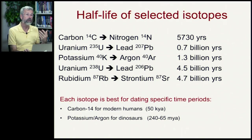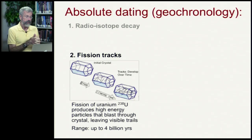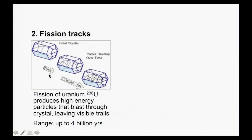A more recent technique in geochronology that's just become available in the last few years is called fission tracks. A crystal of quartz formed with volcanic activity contains a few atoms of uranium-238. Every now and then, one of those uranium-238 atoms decays and produces a blast of energy that leaves a streak through the clear crystal. You can see these visible trails, and this allows you to estimate the ages of quartz back to 4 billion years.